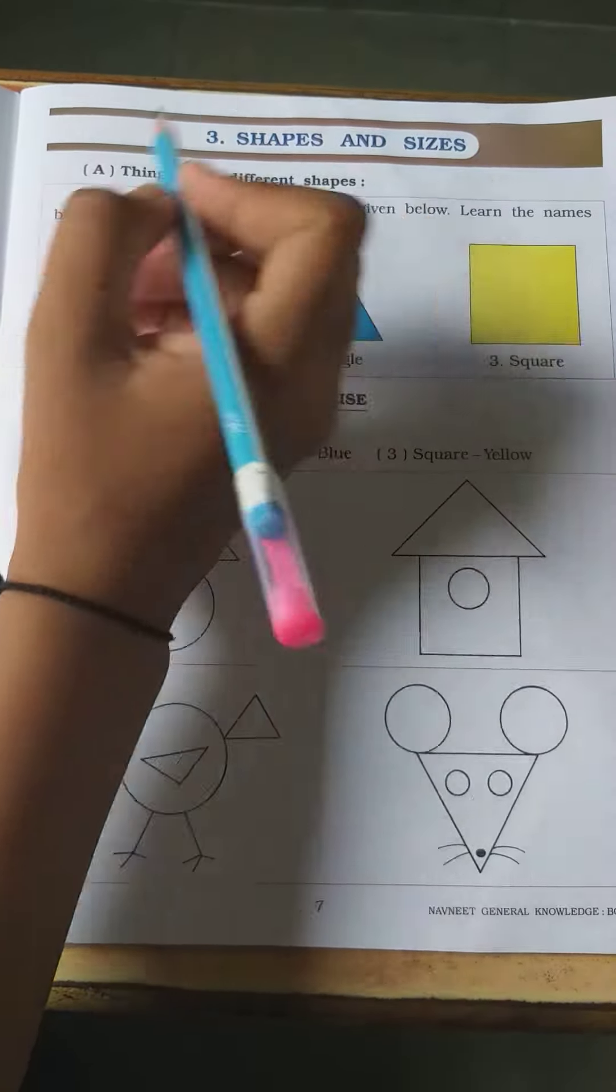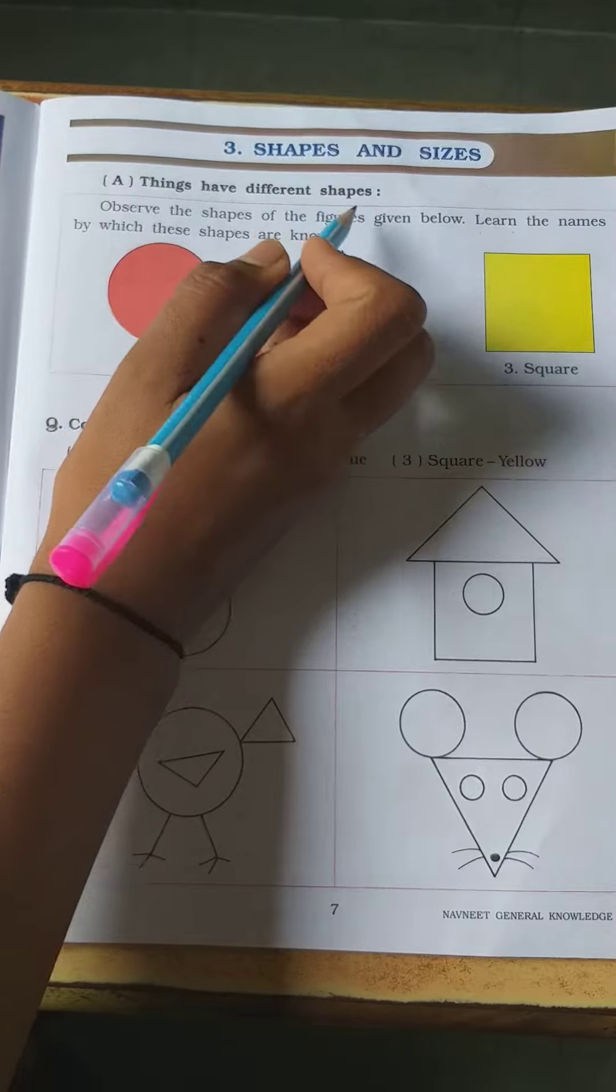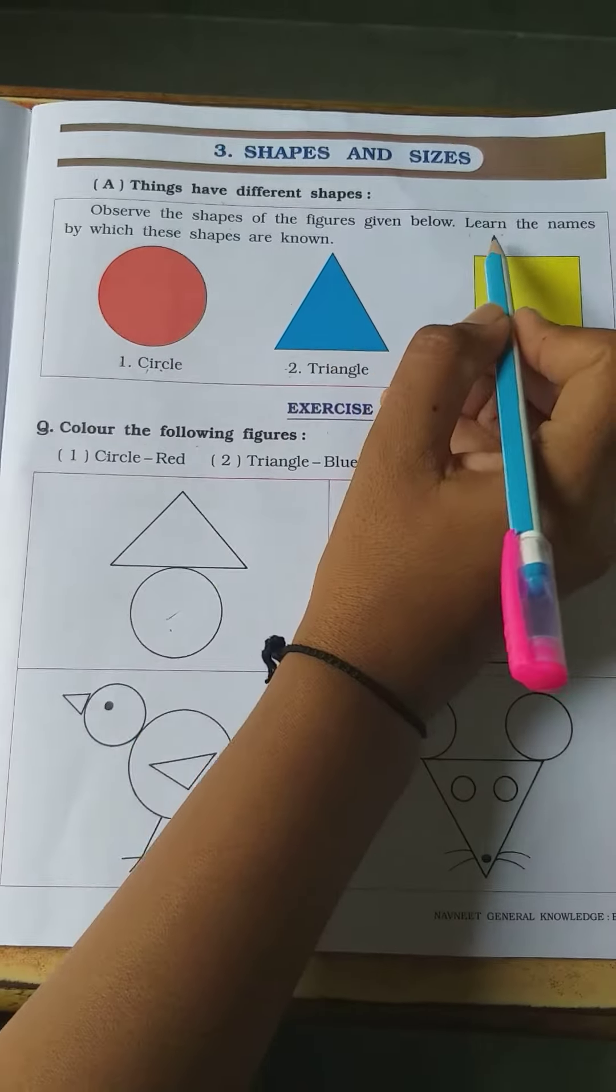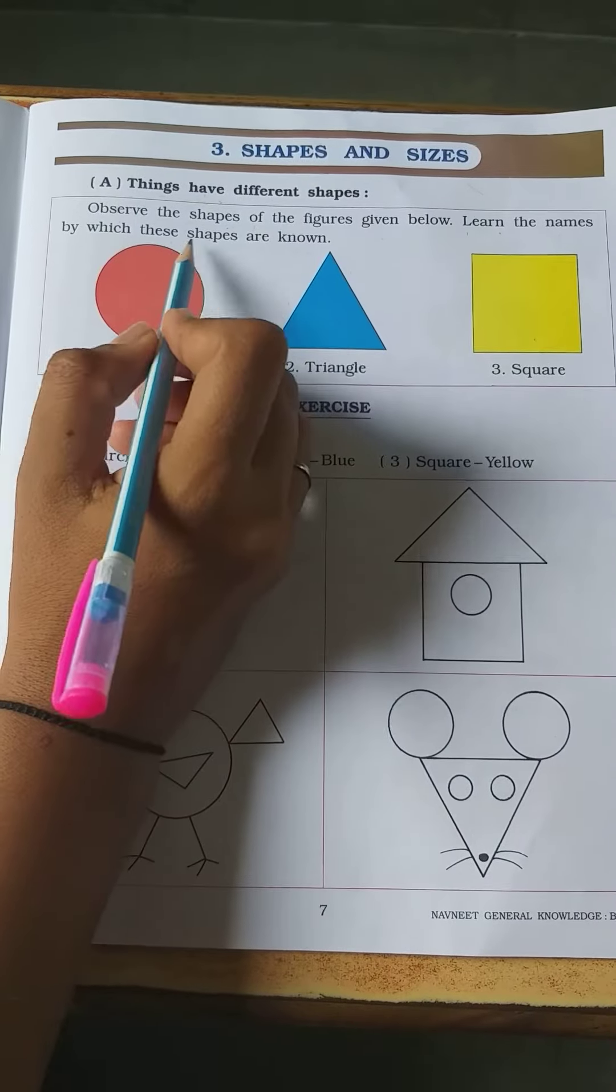3 shapes and sizes. Things have different shapes. Observe the shapes of the figures given below. Learn the names by which these shapes are known.